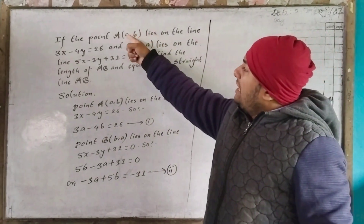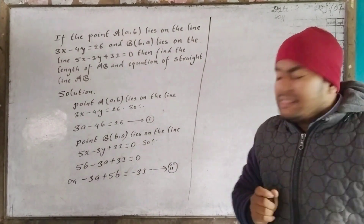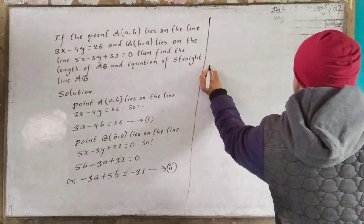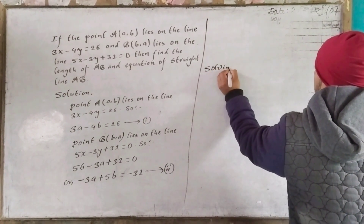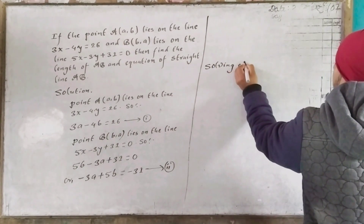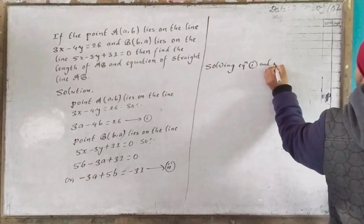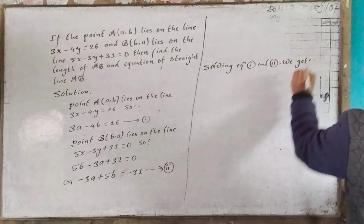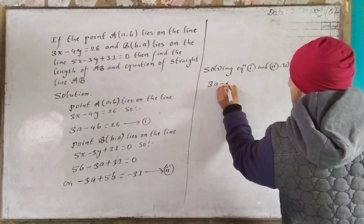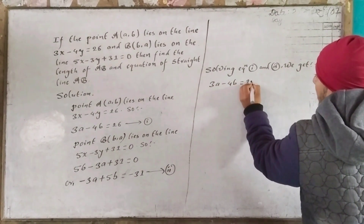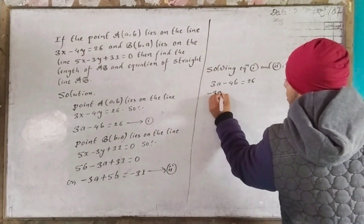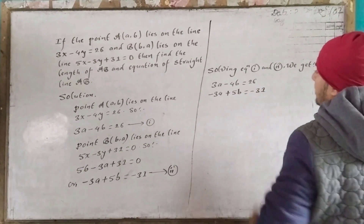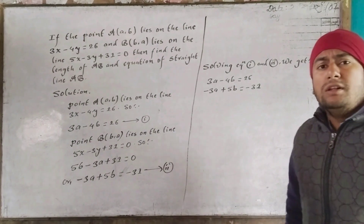Similarly, for point A on line 3x - 4y = 26, substituting the coordinates of A and B, we get equation 1: 3a minus 4b equal to 26, and equation 2: minus 3a plus 5b equal to minus 31.